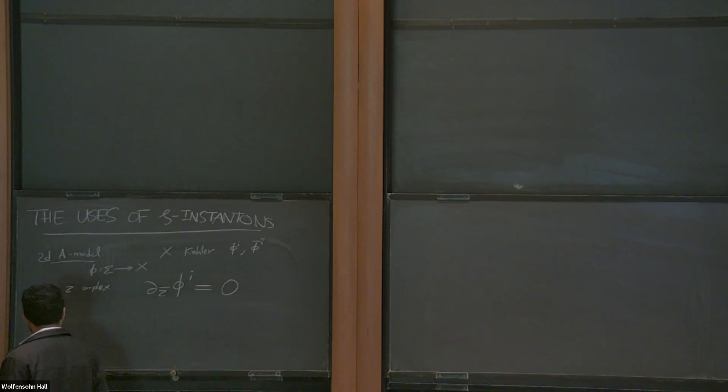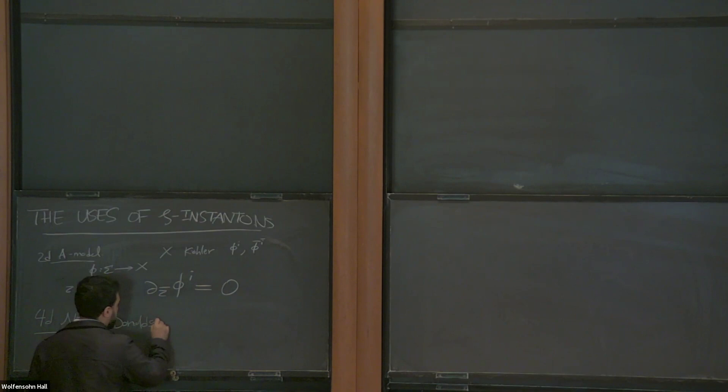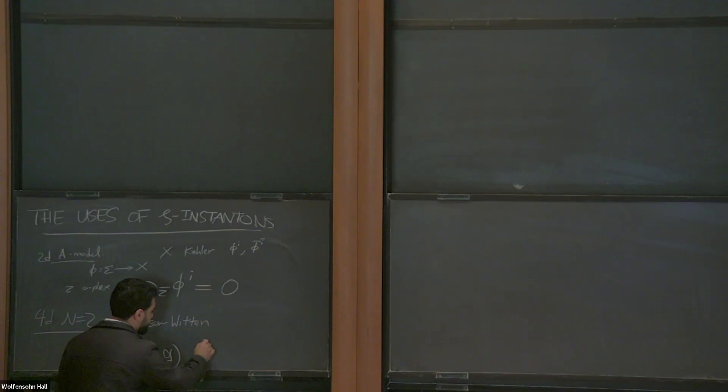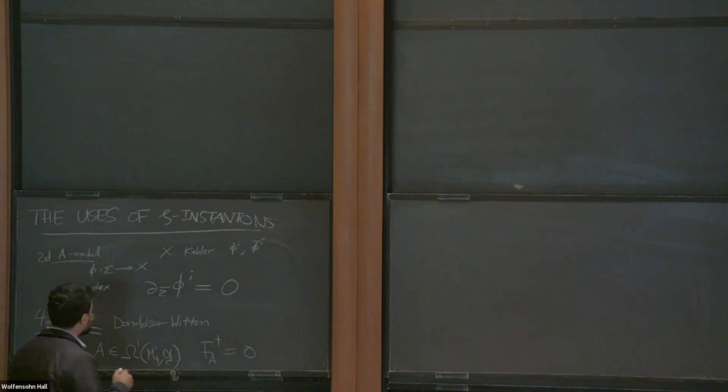Another place where this happens is N equals 2 with the Donaldson-Witten twist. Here, the relevant instanton equation describes a non-abelian connection on a four-dimensional manifold M4, and the relevant instanton equation is just the self-duality equation. So those are two well-known examples.